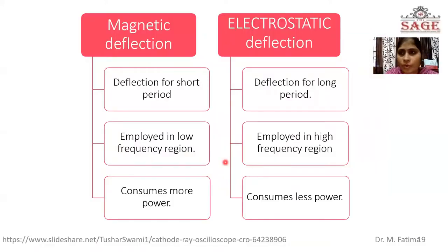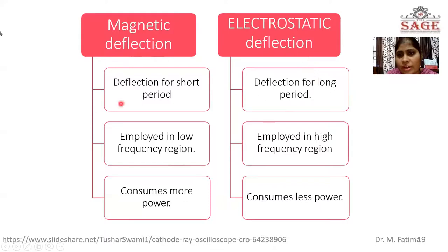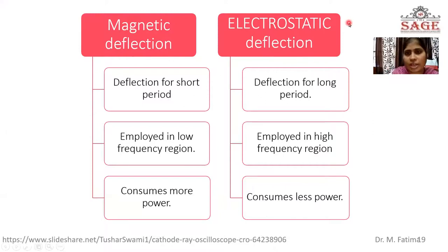There are two types of deflection systems: magnetic deflection system and electrostatic deflection system. In the magnetic deflection system, deflection is done for a very short period; it is employed in low frequency regions but consumes more power. In electrostatic deflection, the electron beam is deflected for a long period; it is employed in high frequency regions and consumes less power. Therefore, electrostatic deflection is used in the CRO.